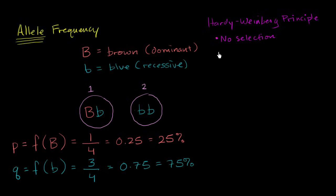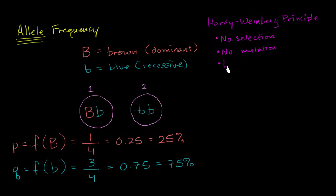We're also going to assume no mutation. So we're going to assume that one of these alleles isn't from generation to generation turning into another one, or turning into maybe a new type of trait — whether it's green eyes or whatever else it might be. And we're also going to assume large populations.